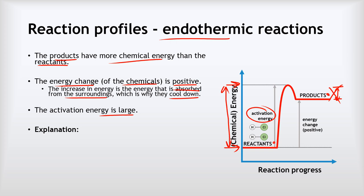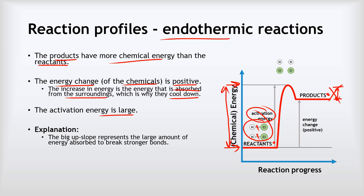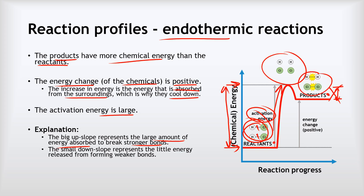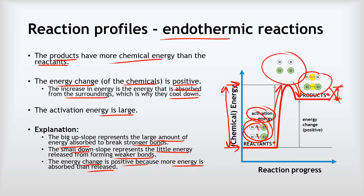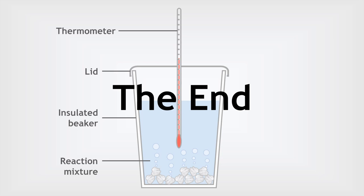To explain what's happening: consider two HCl molecules reacting with each other to convert back to H2 and Cl2. The first step is breaking those chemical bonds, but because they're very strong, a large amount of energy must be absorbed — shown by the big upslope. Those atoms then react to produce hydrogen and chlorine, but because that only makes weak bonds, we get a small downslope representing only a little energy being released. Overall, the energy change is positive because more energy is absorbed than is released. And that's it — thank you for listening, and well done if you got this far.